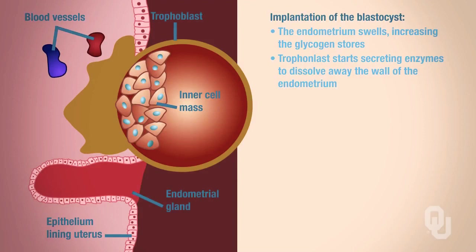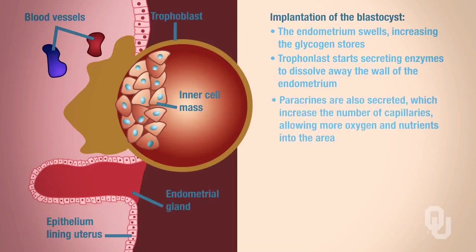We're digesting the cells and providing nourishment for the embryo. At the same time, paracrines are also secreted, and what that's going to do is increase the capillaries in the area so you can bring more oxygen and nutrients to the area, and also remove more carbon dioxide and waste from the area as well.